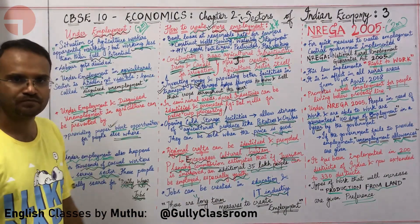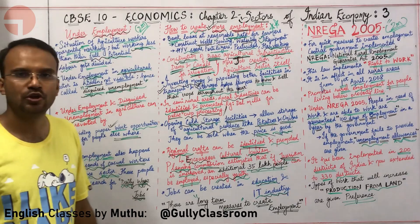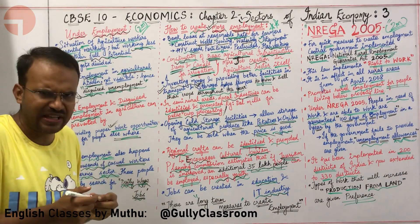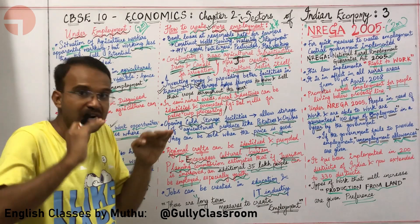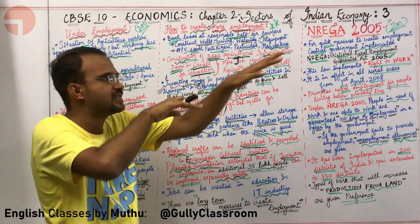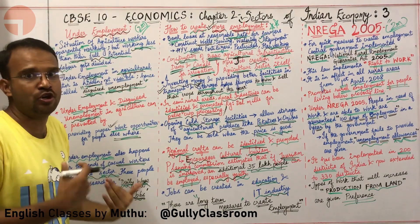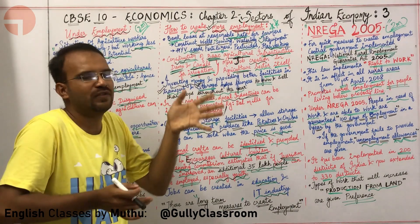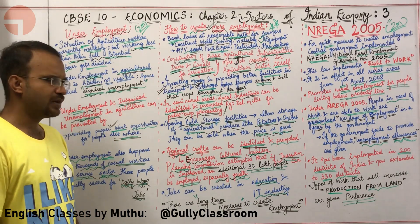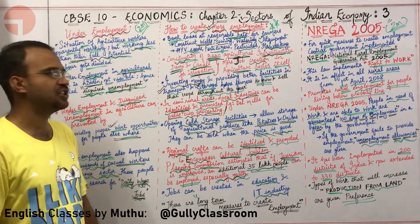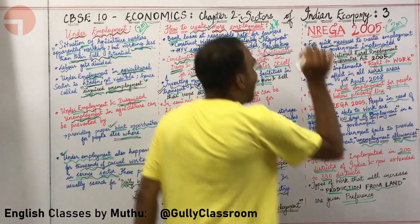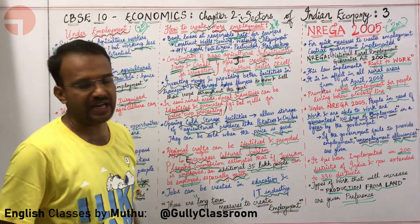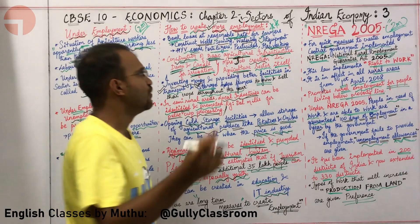These are long-term measures to create employment. You cannot immediately build a dam or promote tourism overnight — you need a long-term strategy spanning many years to implement all these things. Until these long-term strategies are in place, we need quick, immediate measures to provide work opportunities to the rural poor living below the poverty line.